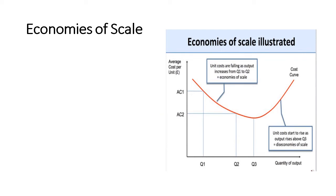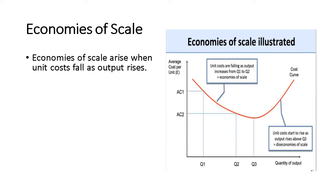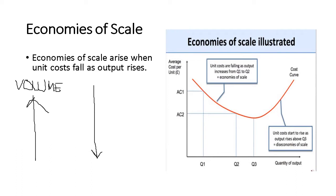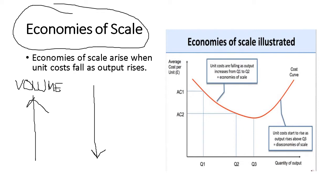Economies of scale occur when unit costs fall as output rises. Meaning, if your volume or quantity of production increases, your unit cost goes down. That is the core principle of economies of scale.